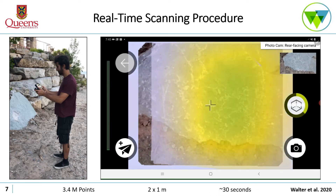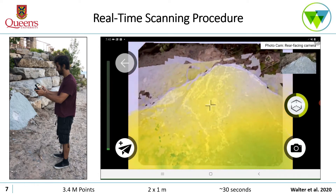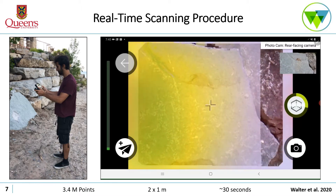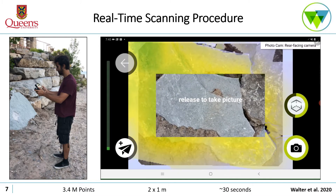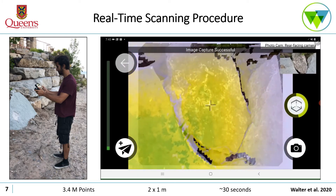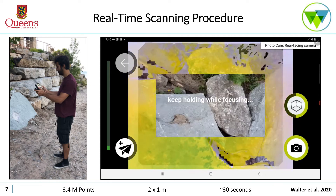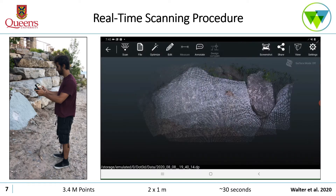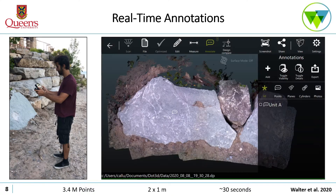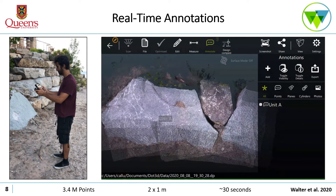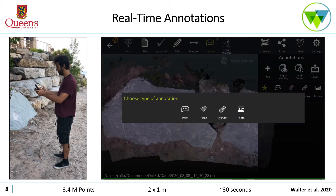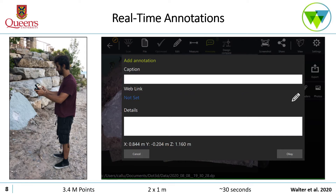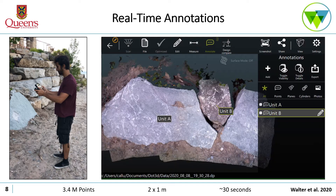This slide demonstrates the user interface displayed to the operator as they conduct a scan in real time. The user interface provides an interactive feedback display that is updated throughout the scanning procedure, where yellow and green coloration represents different data point densities, with green indicating higher data point density. Once the operator has completed a scan, they can visualize the model on the tablet and annotate different features — for example, adding a lithological classification such as unit B within the scan in real time while still in front of the outcrop.